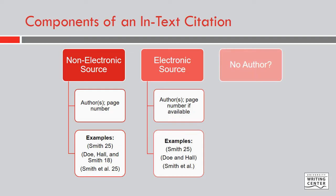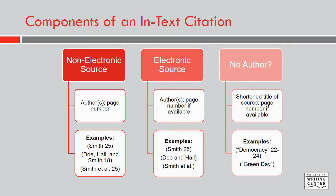Some sources, particularly websites, may not have listed authors. It is still required that you cite this in text, and it is also expected that you will ensure that you are using a credible source. To cite a source with no author, simply use the title or a shortened version of it and a page number if one is available. Note that the title is placed within quotation marks inside of the citation.